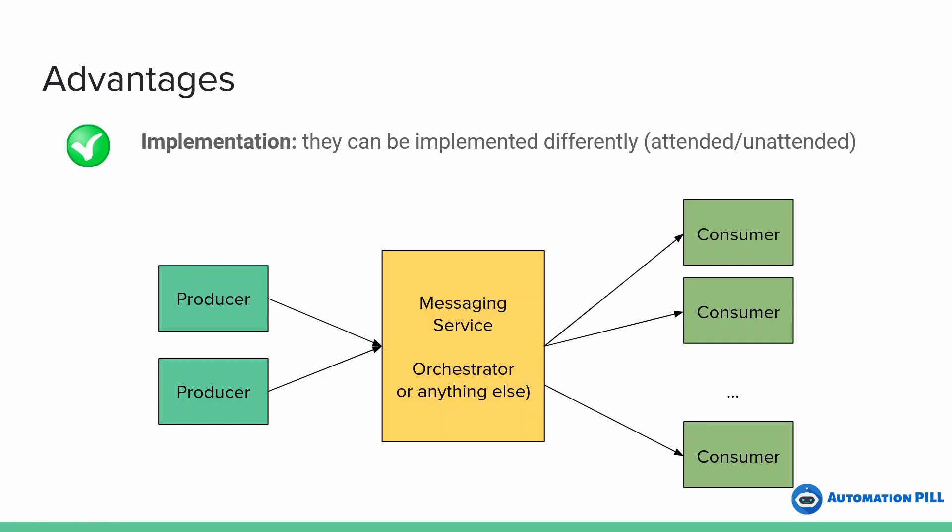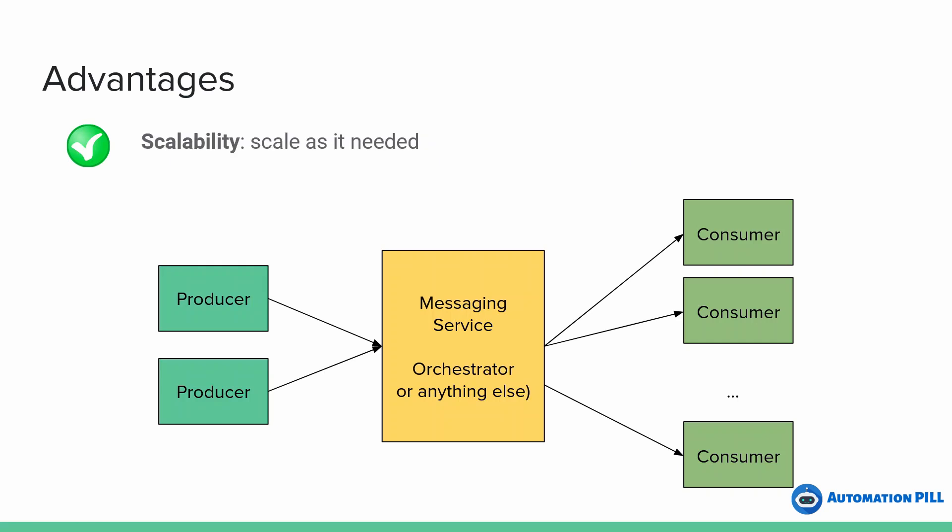That can easily be done with an unattended robot. Another advantage is scalability, because it scales as needed. In this example I have just two — a producer and a consumer — but there's no fixed link between how many producers and how many consumers you have. Of course, there's no advantage if you have just one producer and one consumer, because you basically have a linear process with added complexity in the middle. However, if you design a process like this, it's easier to scale in the future.